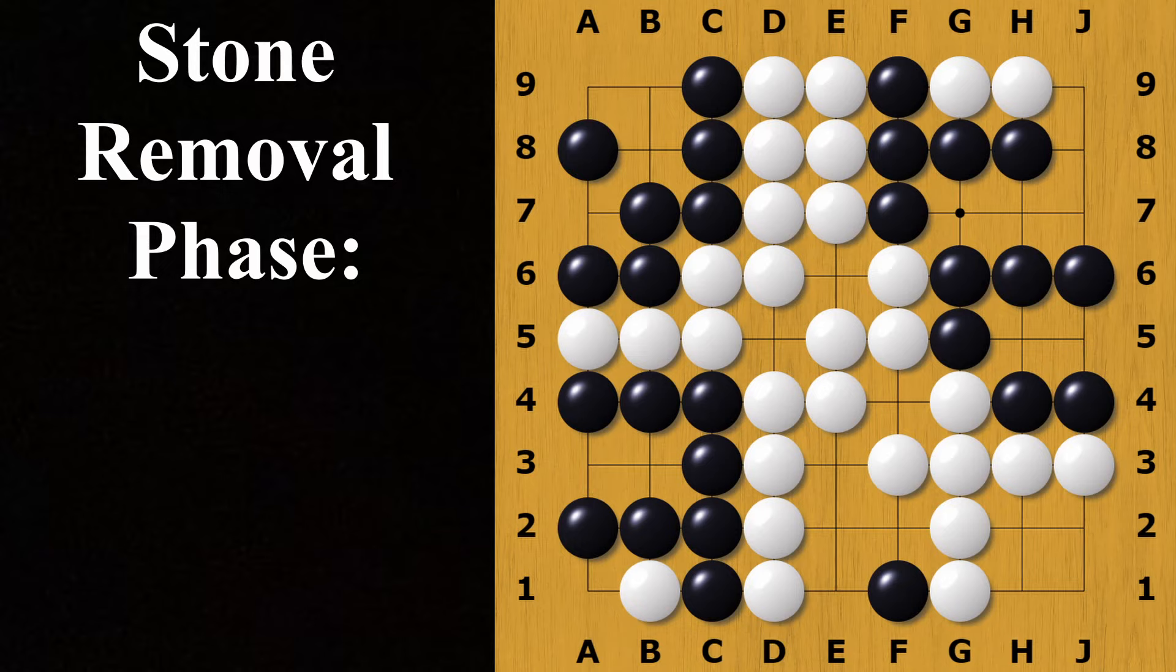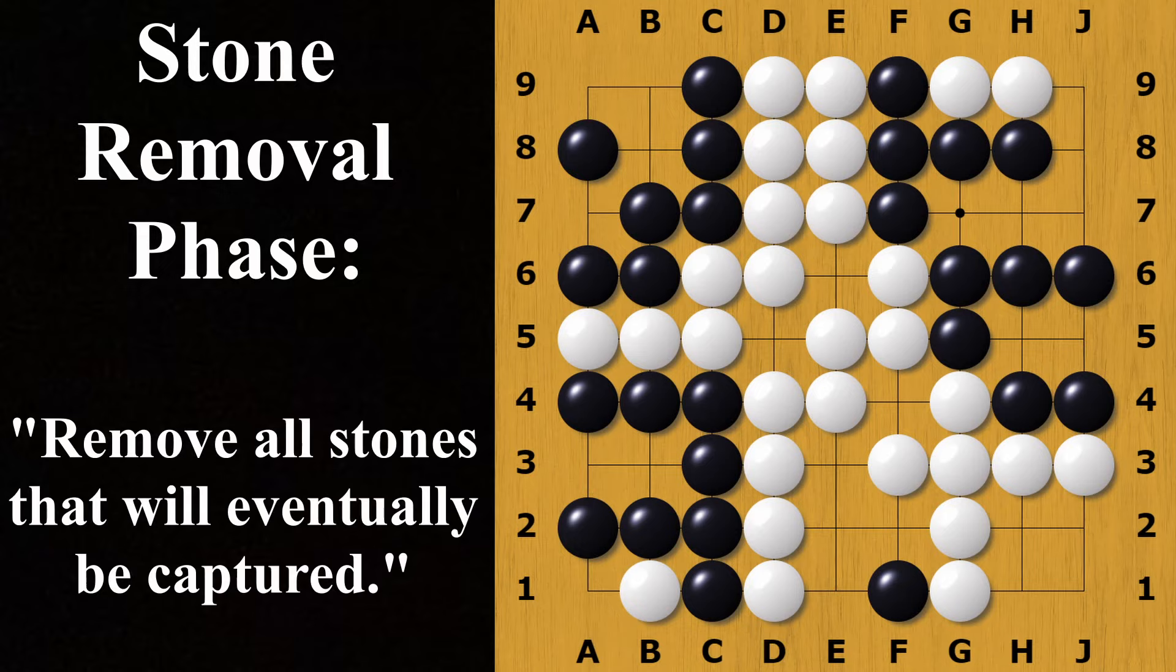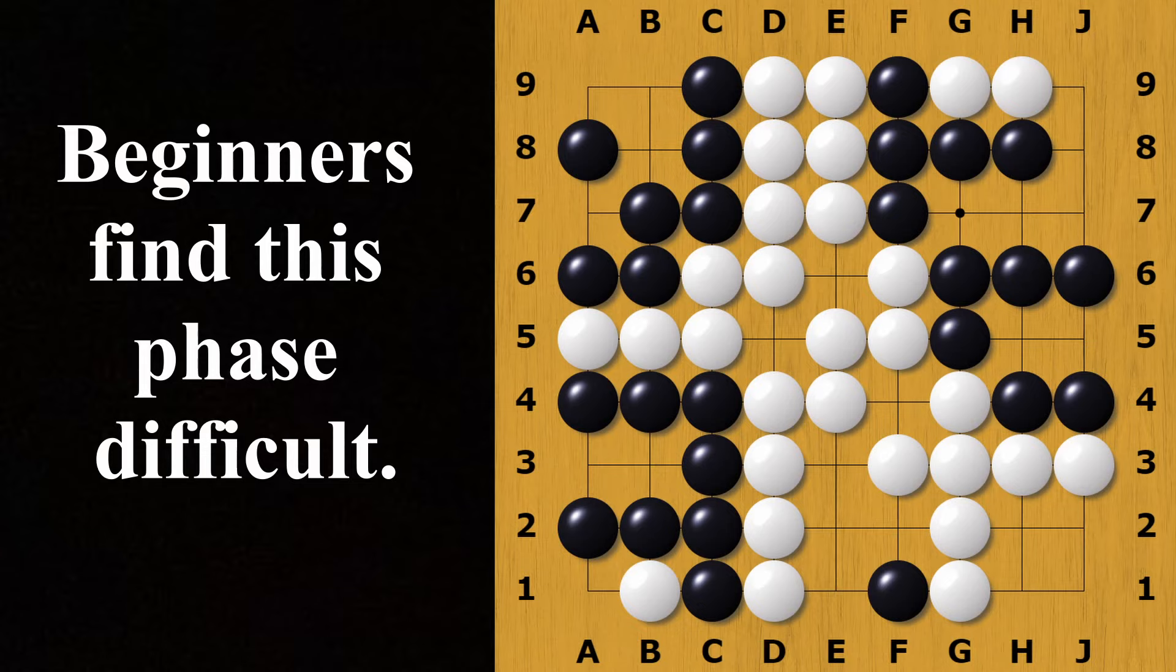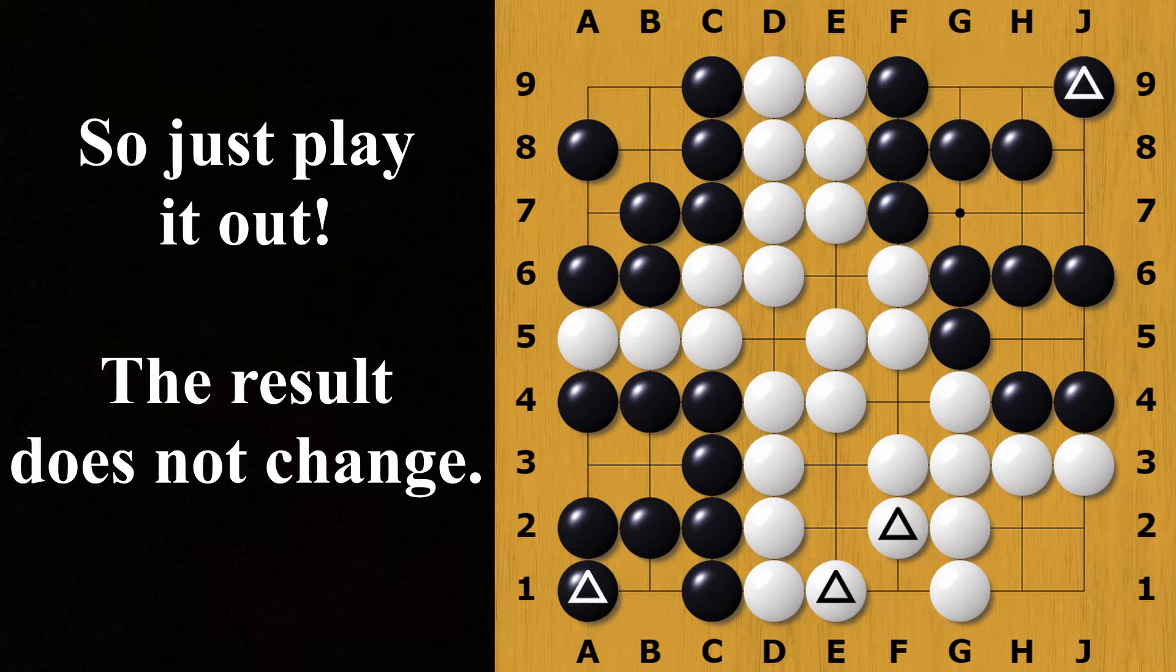Players usually choose to pass when they realize there are no more points to make or take on the board. If you are uncertain as a beginner, it is recommended to just keep playing until it becomes obvious. Once both players pass, we have the stone removal phase. This is where players remove stones inside their territory that will eventually be captured. A beginner might find this phase difficult, so it is encouraged to just play it out until there are no stones left in their territory of the opposing color.